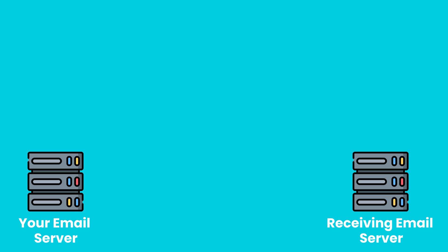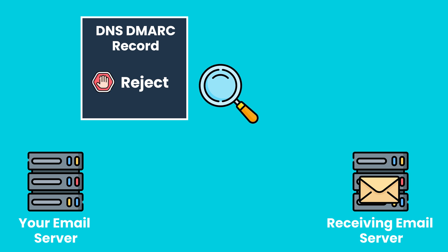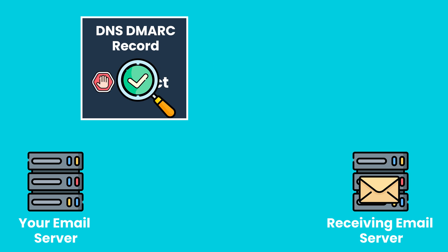DMARC works through DNS entries. The sender first configures that DNS entry with the policies on what they want to do if that DMARC check fails. When the receiving email server checks that DNS entry, they get the instructions on what to do if it fails, and then they'll take the appropriate action. This is the most comprehensive way to protect your organization from attackers spoofing your email domain, because it enforces SPF and DKIM and gives very clear instructions on what to do when somebody is trying to spoof your domain.